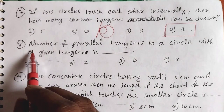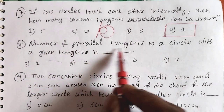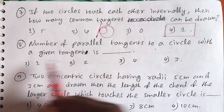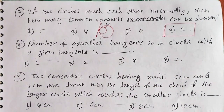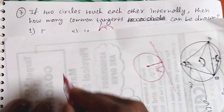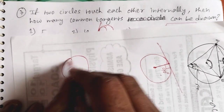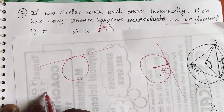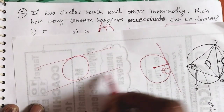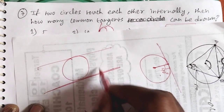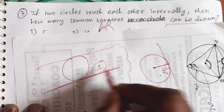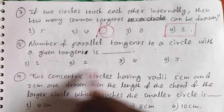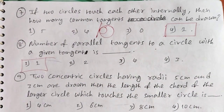Question 8: The number of parallel tangents to a circle drawn to the given tangent. If we have a circle and a tangent, how many parallel tangents can be drawn? Only one parallel tangent can be drawn. So the first option, one, is the answer.